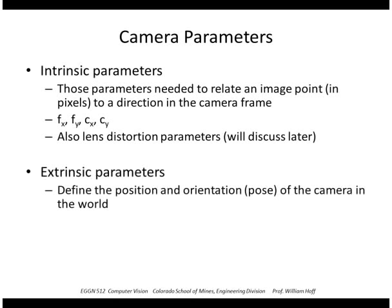The other type of camera parameters are extrinsic parameters, and these essentially define the position and orientation, or pose, of the camera in the world.